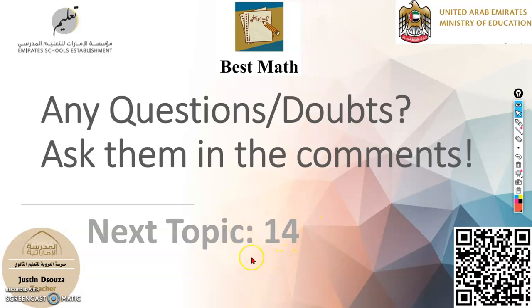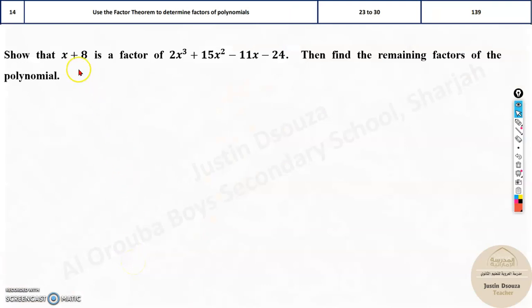The next topic, that is the 14th topic, is on Factor Theorem. You have been given a term. We need to show that this is a factor of this particular term, then find the remaining factors.